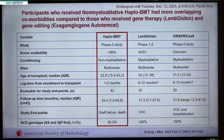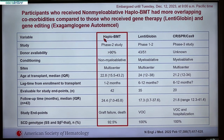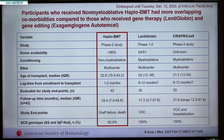It was clear that participants who received non-myeloablative haploidentical bone marrow transplant had more overlapping co-morbidities in our study compared to those who received gene therapy — whether lenti-globin or gene editing — based on what is published. So if you look at the three curative therapies now: